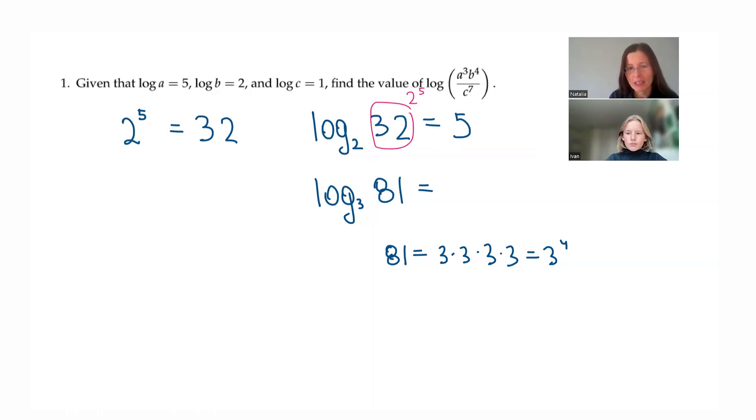Let's do it by analogy. So now we have log base 3 of 81 and 81 is 3 to the 4th. So what do you think we should write here? 4. Because we need to write the exponent.